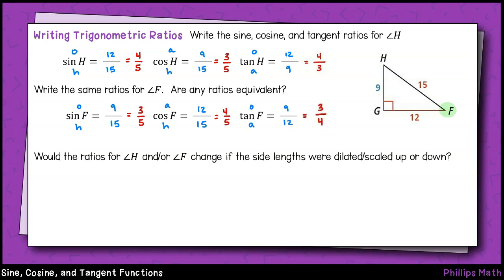How did you do? Were any of these ratios equal to the ratios for angle H? It seems like sine of H is equal to cosine of angle F. It's also true that cosine of angle H is equal to sine of angle F. Interesting. I also noticed that the outputs for the tangent functions for angles H and F are reciprocals, 12 ninths and 9 twelfths.